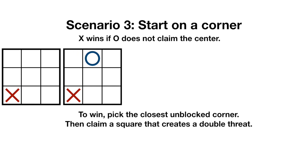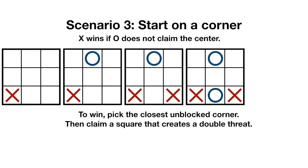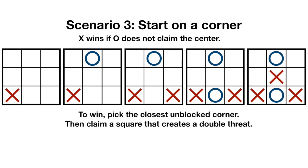If O starts with the far edge, the same procedure applies. X chooses the closest available corner, O parries the threat, x creates a double threat, game over.